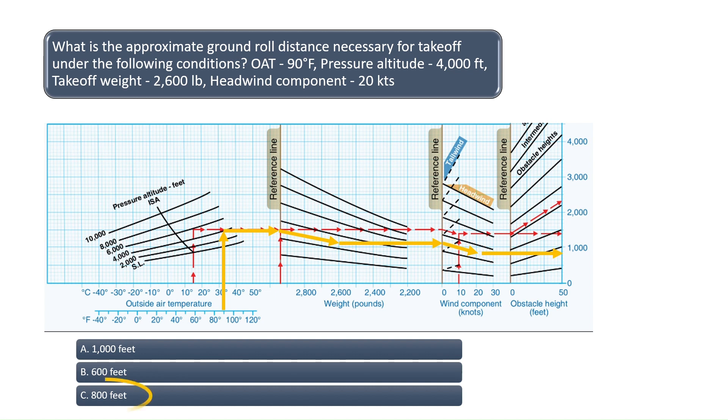Notice that the line ends up right under the 1,000 figure on the far right hand side of the chart. This means the approximate ground roll distance based on the given set of conditions is 800 feet. The correct answer is C.